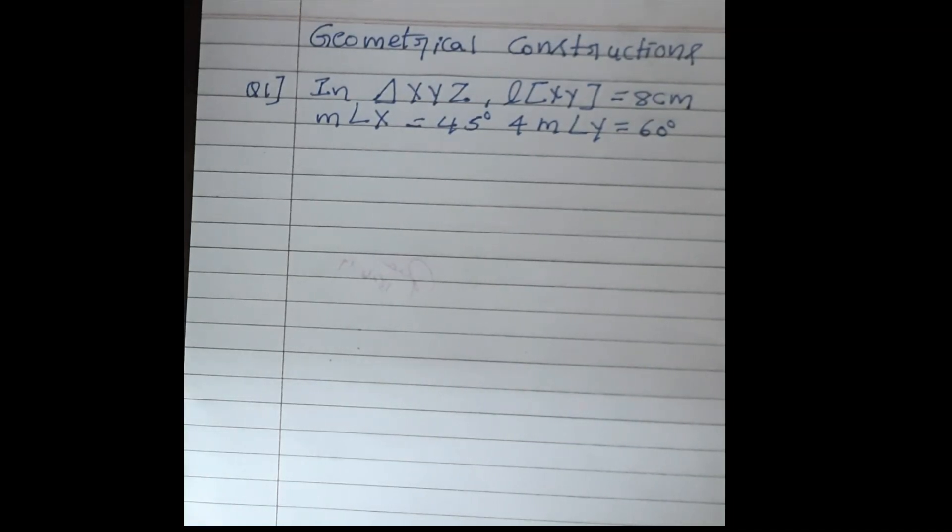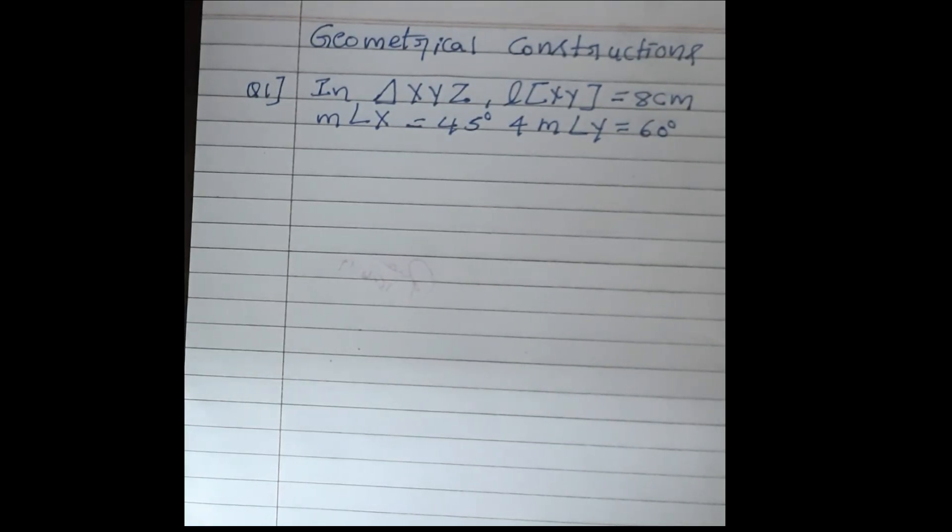Hello everyone, today we are going to learn geometrical constructions. Question is, in triangle XYZ, length of XY is 8 cm, measurement of angle X is 45 degrees and measurement of angle Y is 60 degrees.